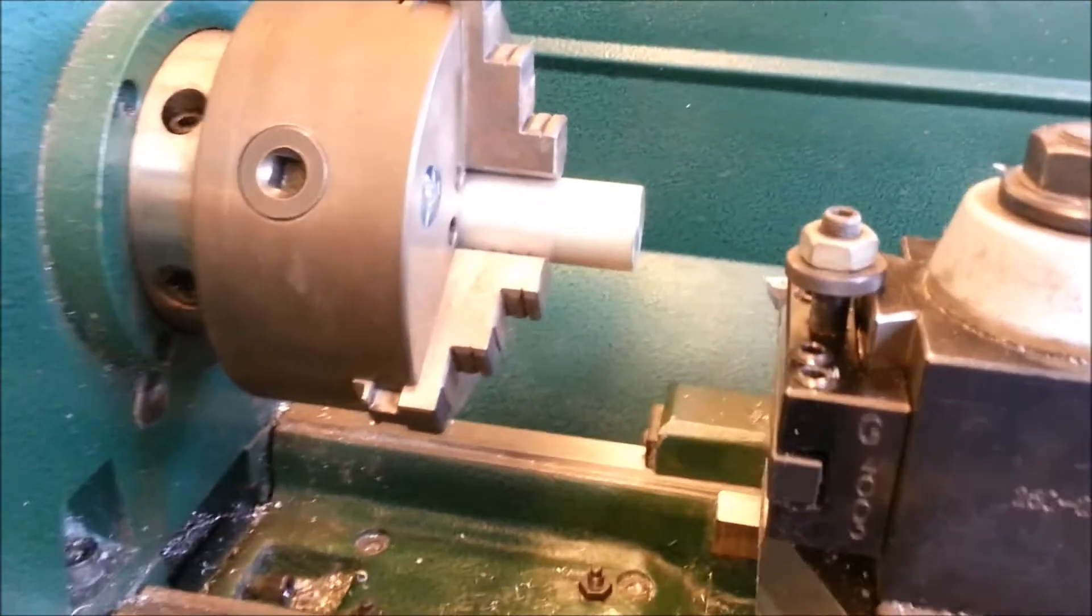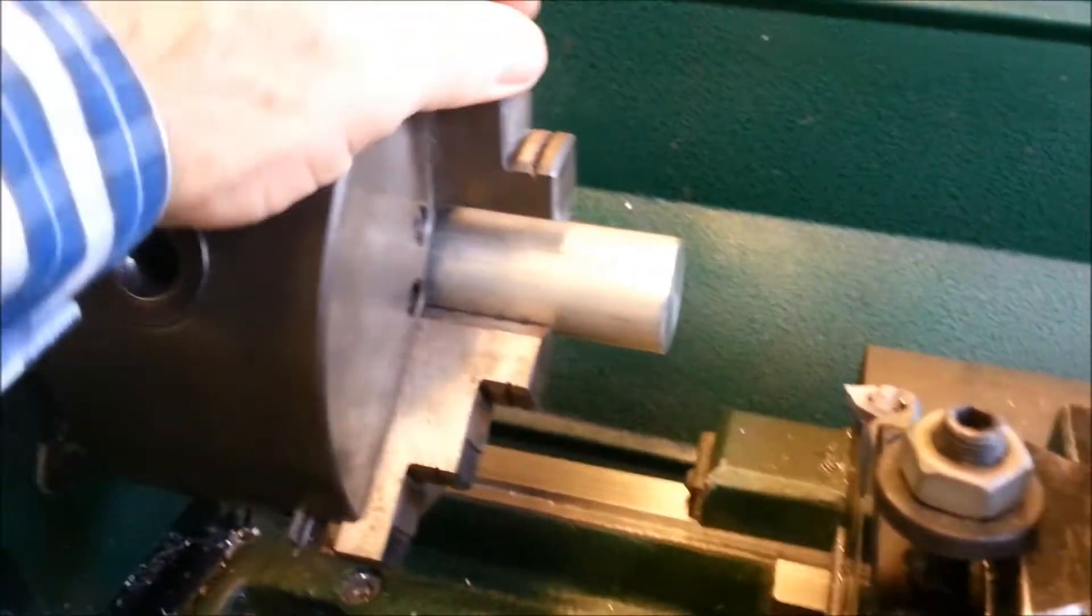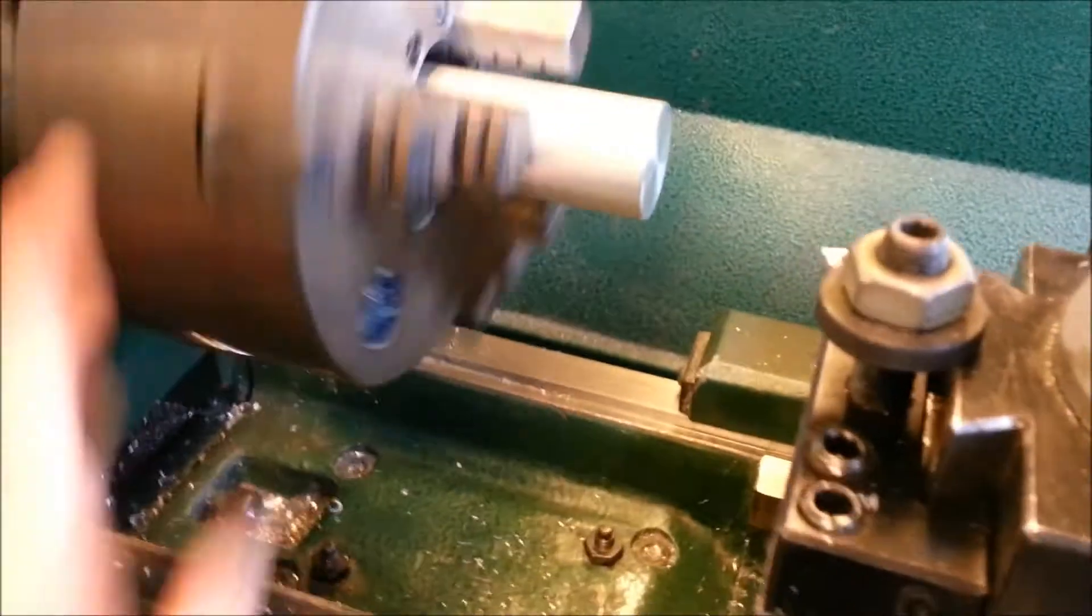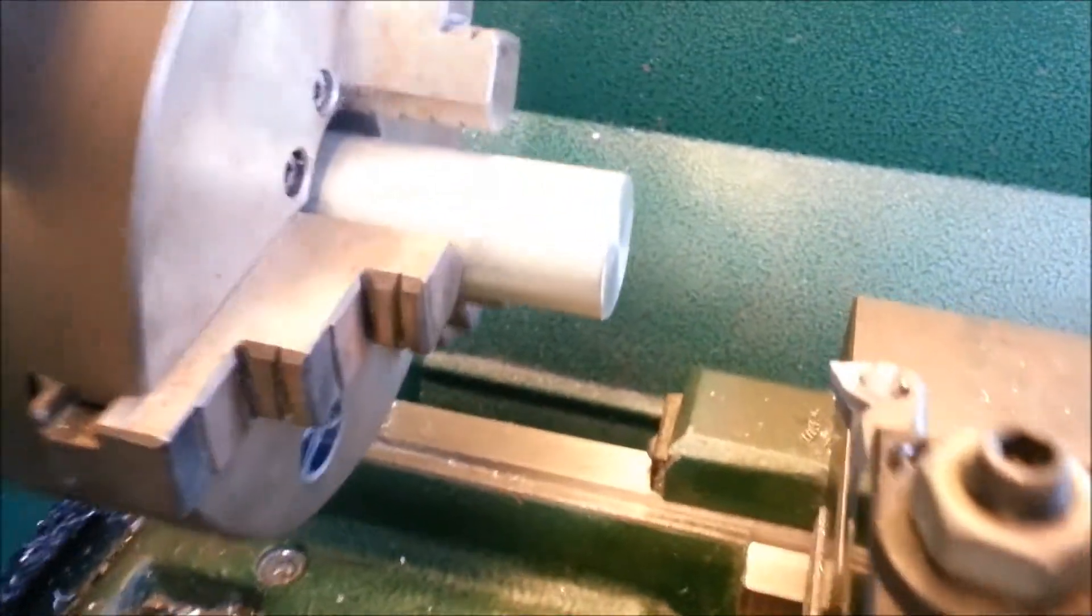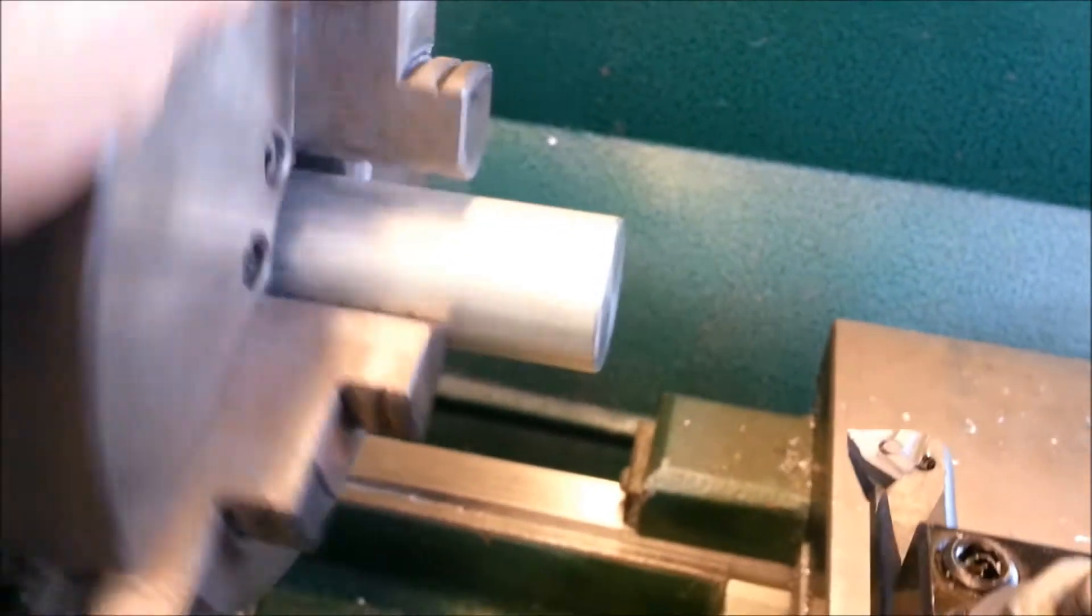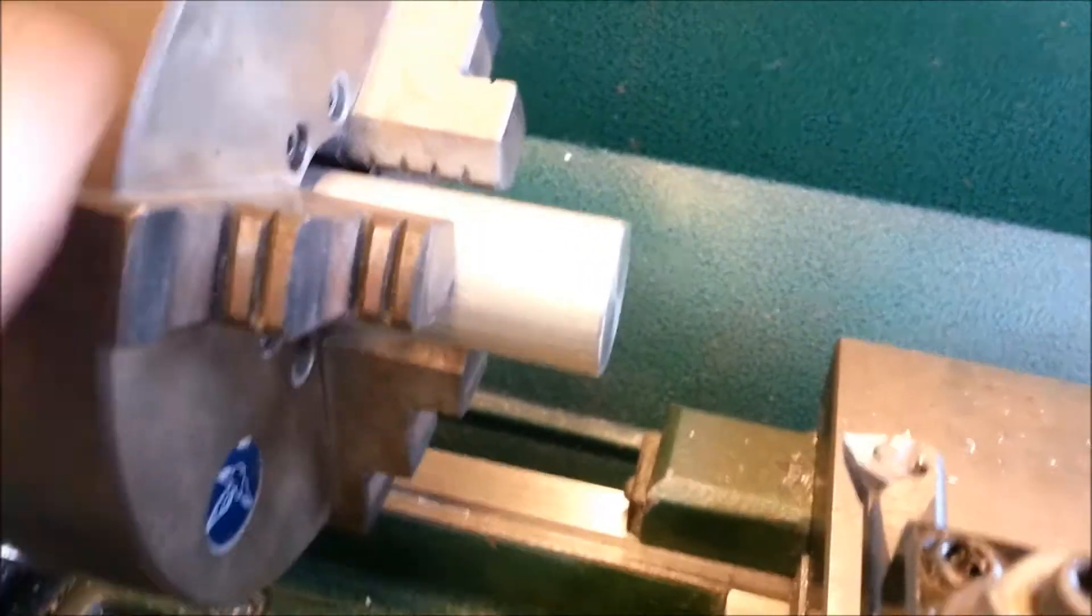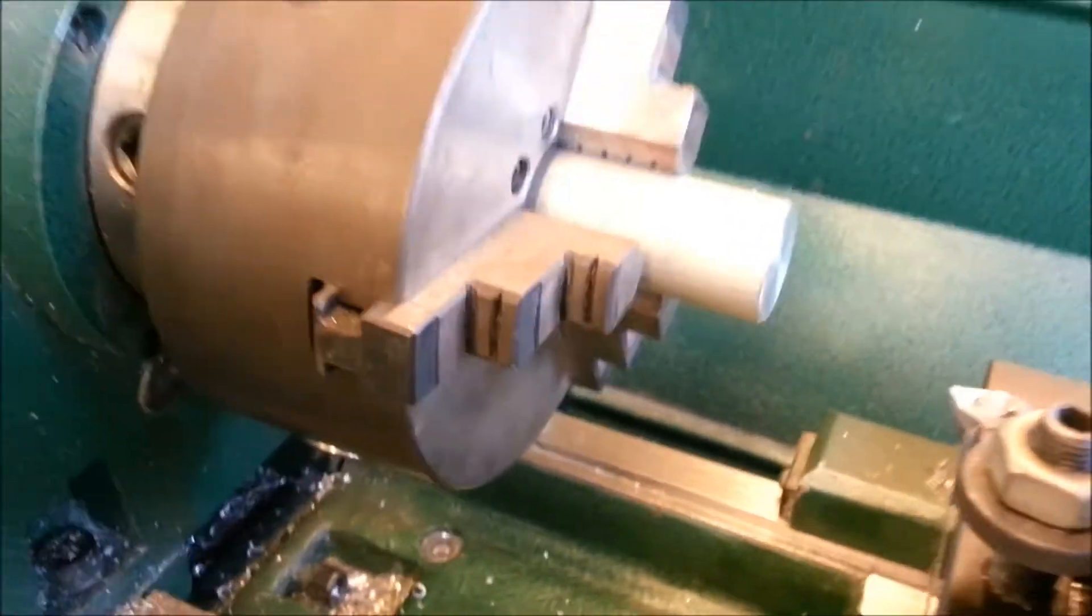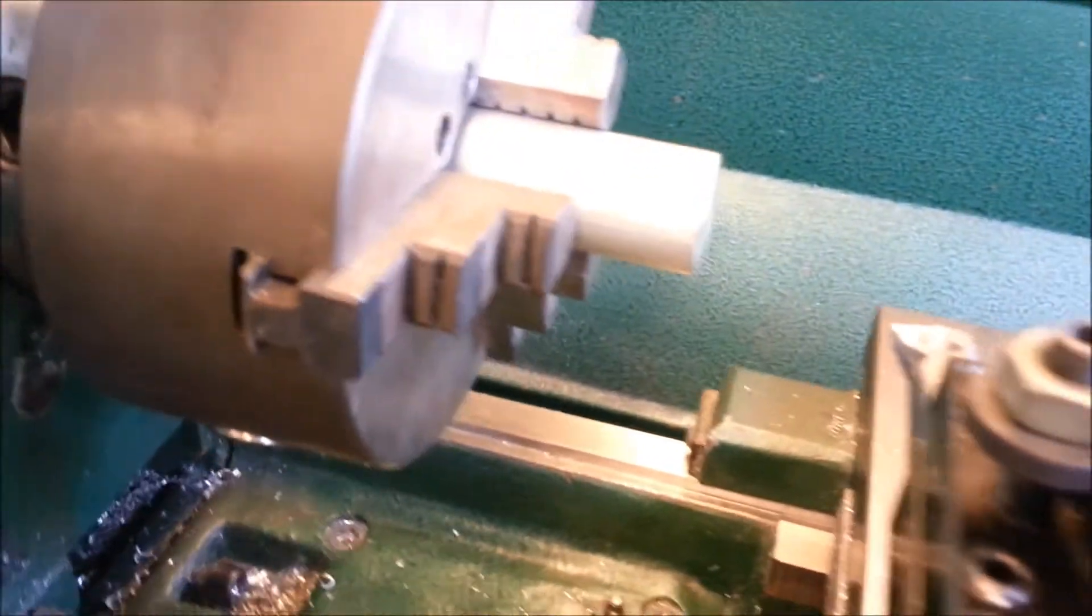Next, what we want to do is always spin the three-jaw chuck by hand. If you notice here, it's only being grabbed by two jaws. The third jaw is not touching it, which means it's being held in an oblong fashion. You would never want to turn on the lathe having it in this way.